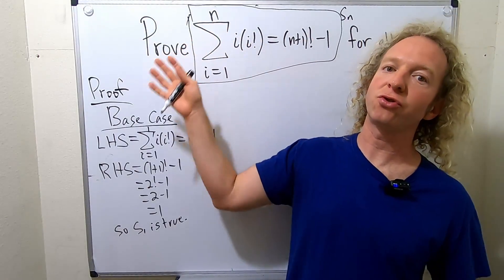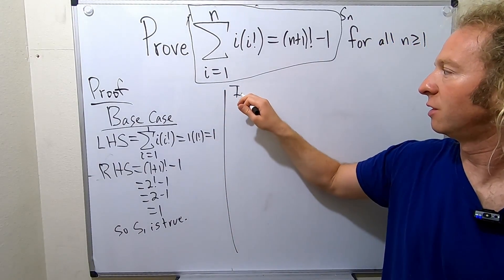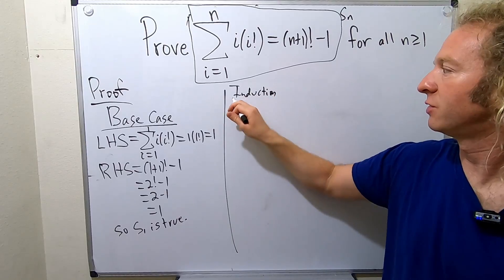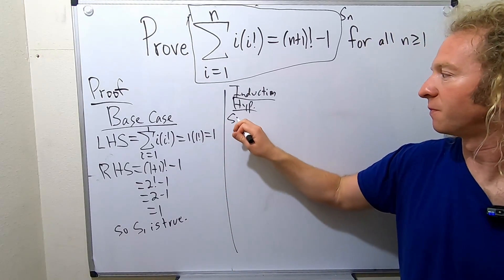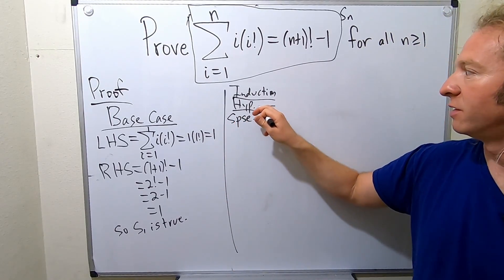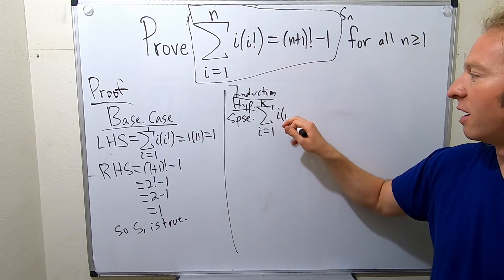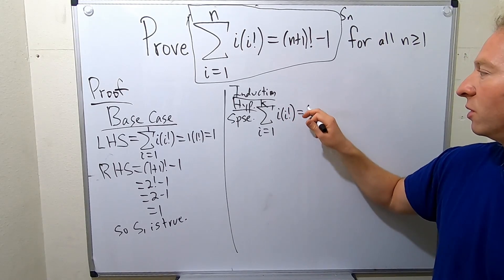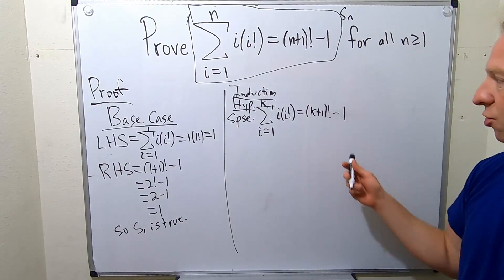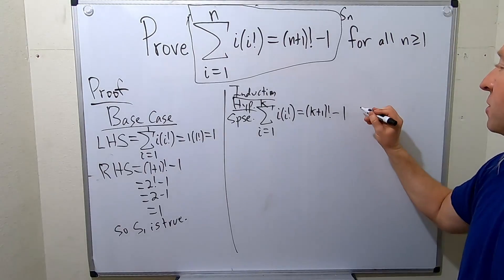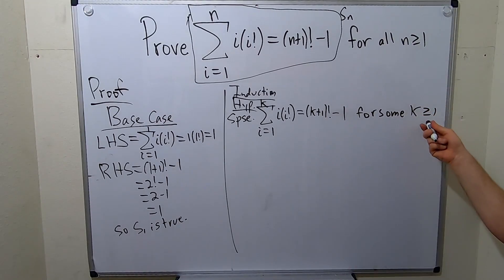Basically all we do is we suppose our statement is true when n is equal to k. So the induction hypothesis — we get to say that this is true when n is equal to some k. So suppose that we have the finite sum as i runs from 1 to k of i times i factorial equal to k plus 1 factorial minus 1. We get to assume this is true, and this is for some k greater than or equal to 1.